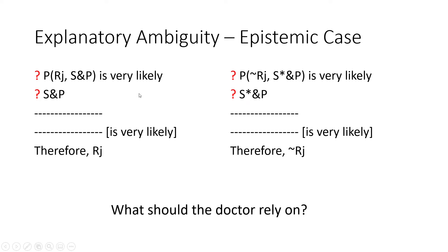This problem can be reformulated to the epistemic case of explanatory ambiguity, because in our scientific knowledge we are rarely sure that our premises are actually true. We deal with premises which are accepted or assumed to be correct on the basis of empirical science. This is closer to actual practice, and the problem arises here as well because it is very likely that we assume both of these probabilistic laws.